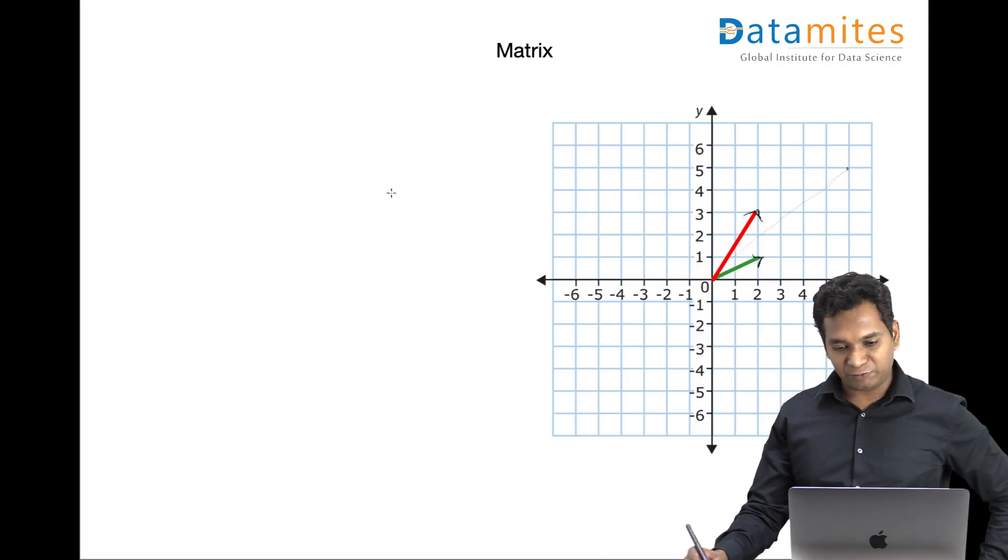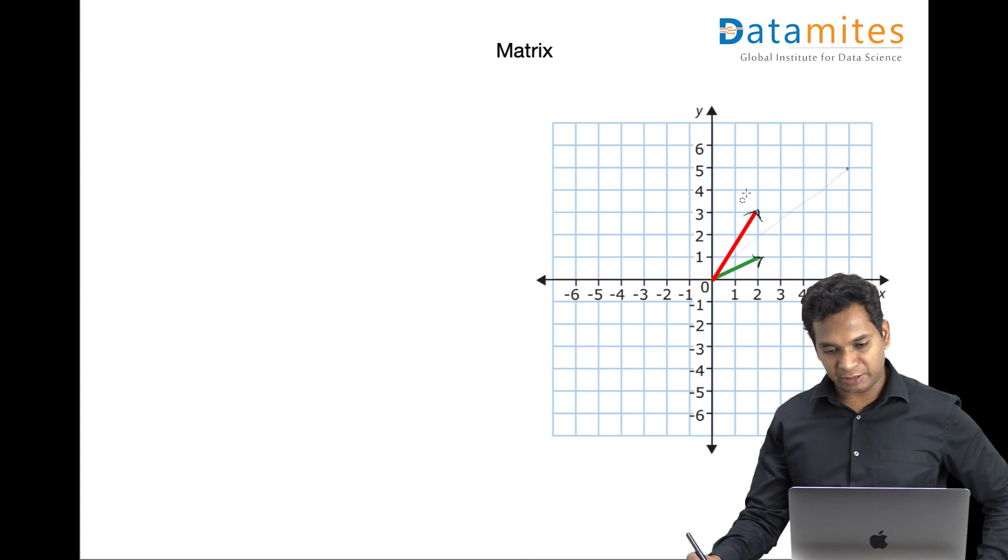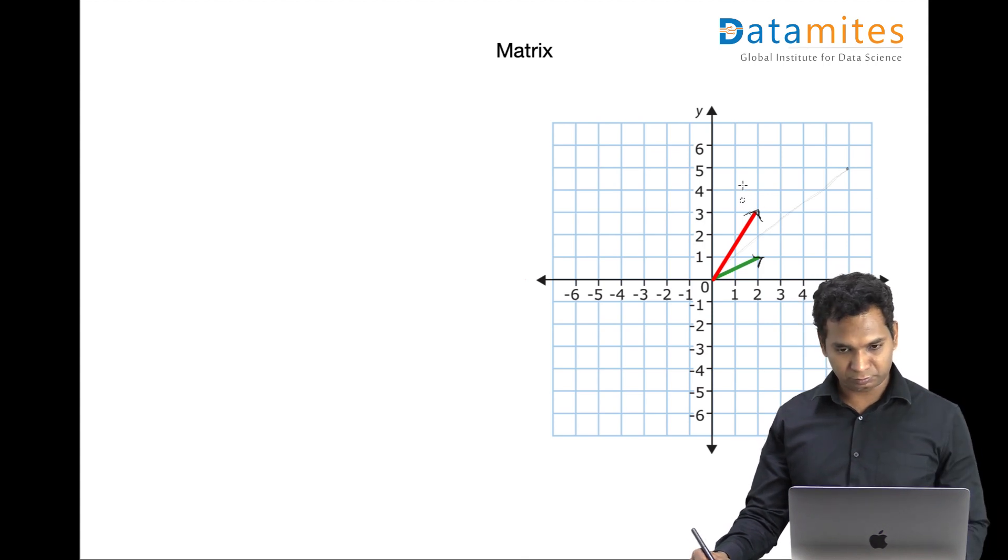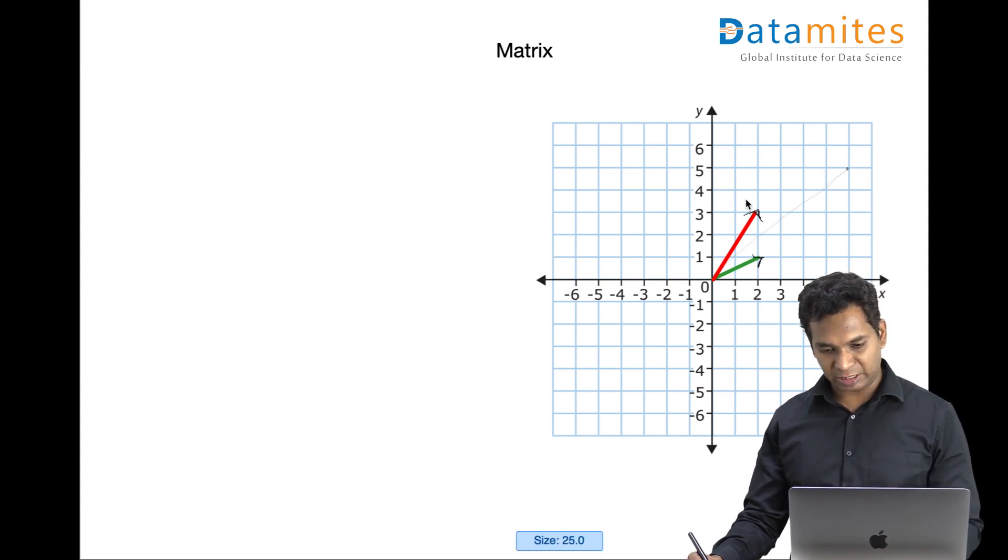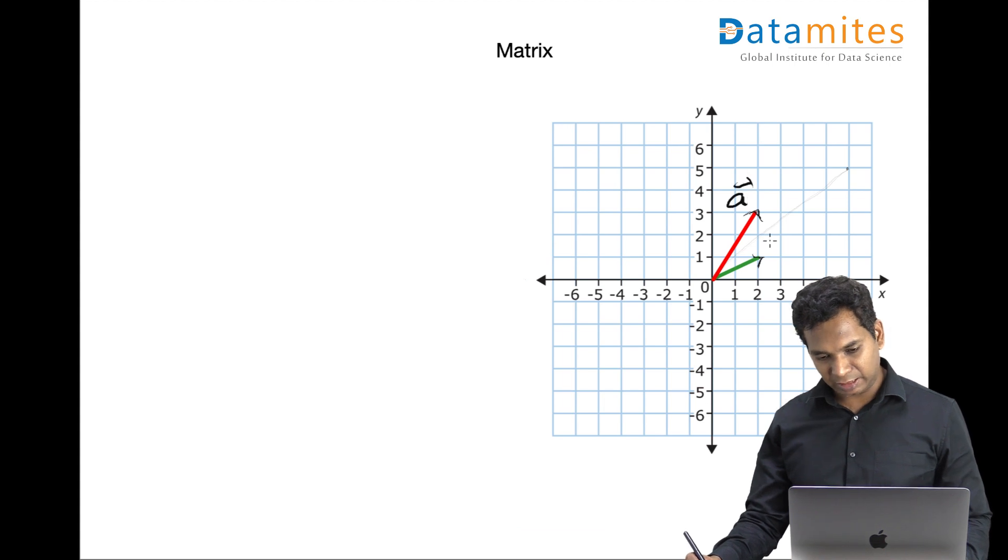So let's say I have two vectors over here. This I call it as a and this is b.